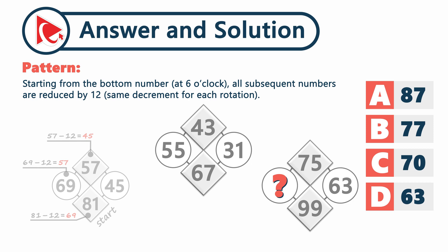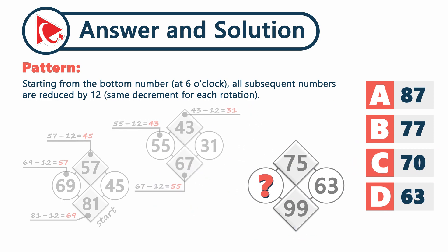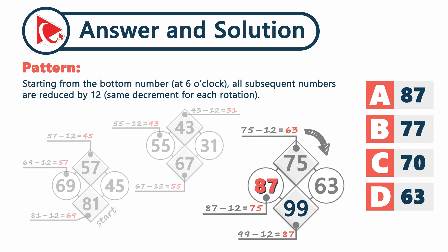Now let's confirm our calculations with the second shape. The highest number at 6 o'clock is 67. 67 minus 12 equals 55. 55 minus 12 equals 43. And 43 minus 12 equals 31. Now it's the magic time to calculate the missing number. The number at 6 o'clock here is 99. 99 minus 12 equals 87. We could stop here since this is the final answer, but let's continue to practice: 87 minus 12 equals 75, and 75 minus 12 equals 63, which verifies all the numbers and confirms the correct answer, which is choice A: 87.